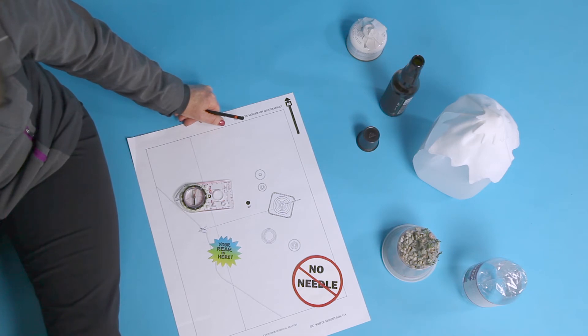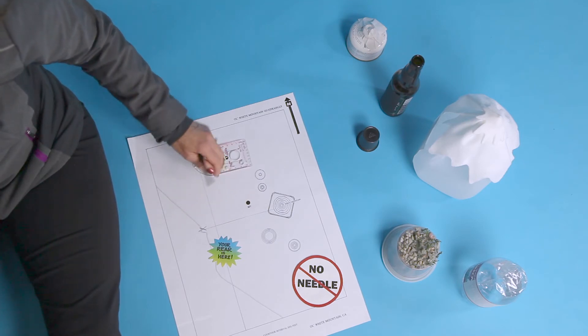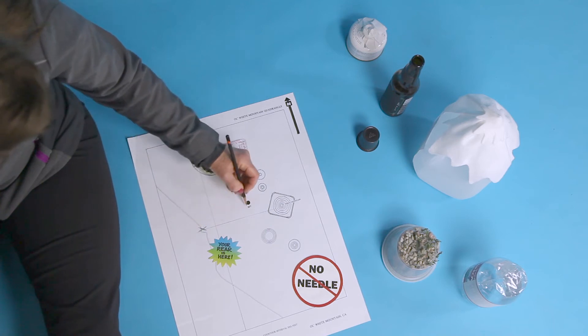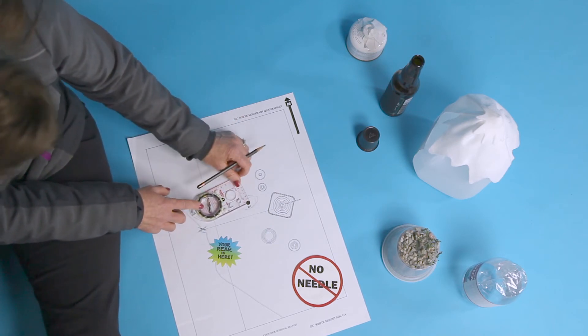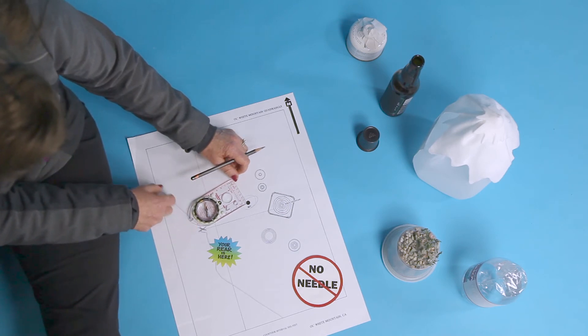If you want to identify a feature you see on the map, start by taking a map bearing on that feature. You got this too. Your rear is here. The WT is here. Put either side of the base plate along the line between them. The rear of the compass goes where your rear is on the map, at the X.